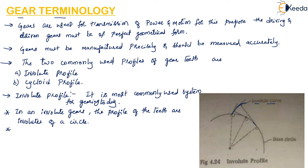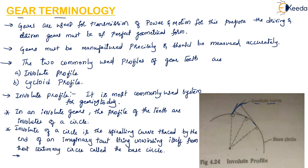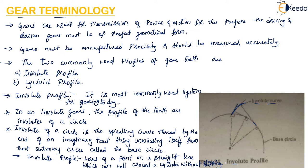So if this is the base circle and there is an imaginary taut string, the spiraling curve traced by the end of this string as it unwinds from the base circle is called the involute of a circle. The involute profile can also be defined as the locus of a point on a straight line which rolls around a cylinder without slipping.